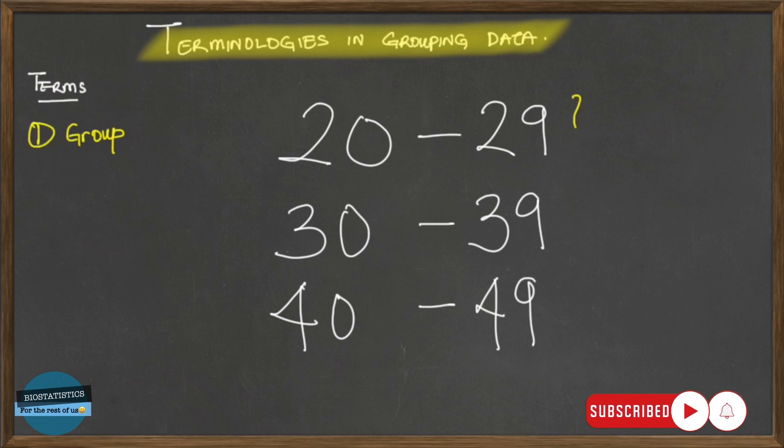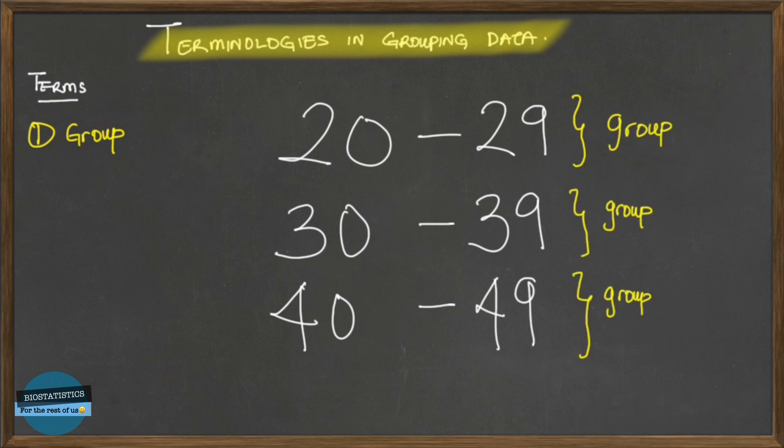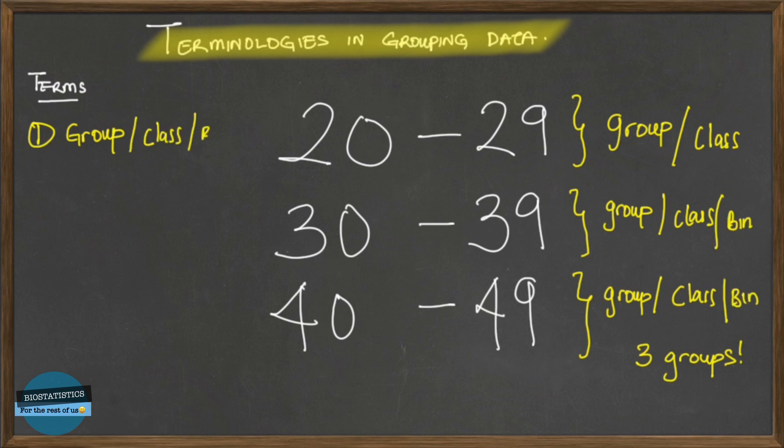The first terminology we'll be explaining is called groups. So here you can see we have the first group, we have another group, and we have three groups. These groups can also be called classes. So we have three groups or three classes, and some software actually call it bin. So in Excel, for example, you have it as bins.